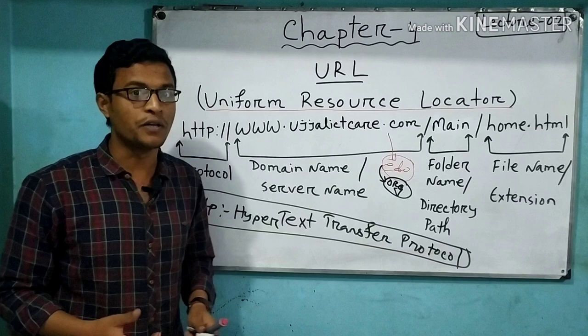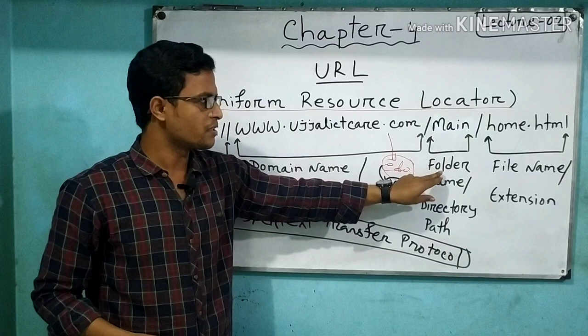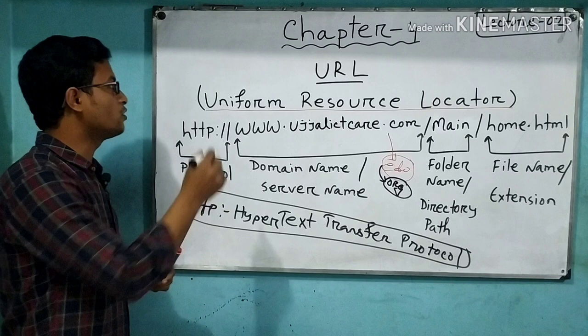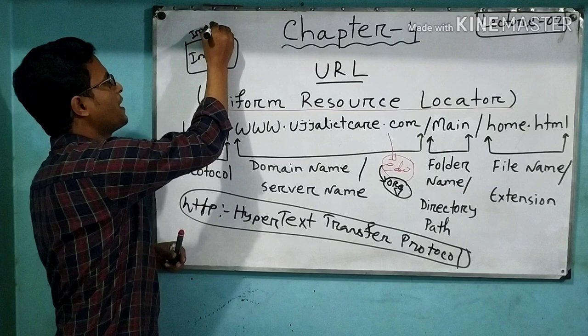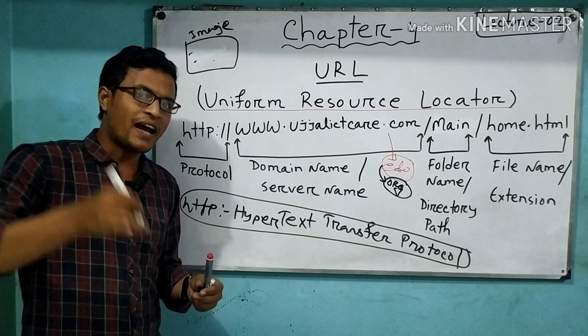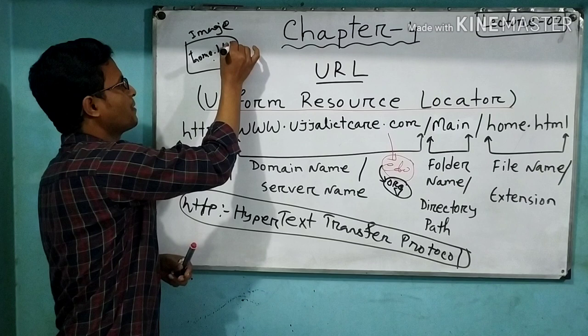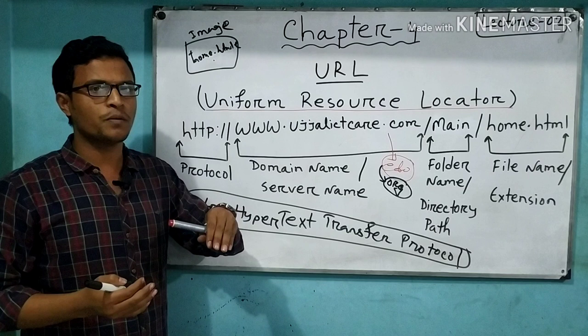We will see the folder name — the directory path. The folder name is the directory path. Here we call home.htm the file name with its extension. We need to connect the file — connect file, image folder, image — and check the file. This folder is called image.